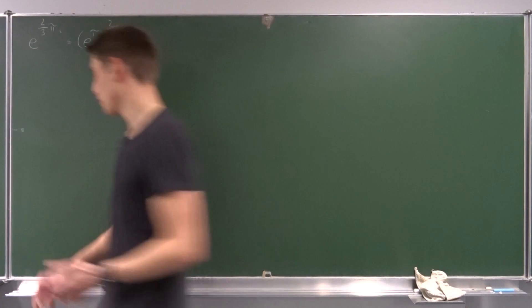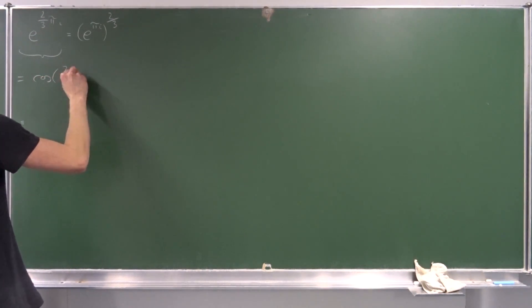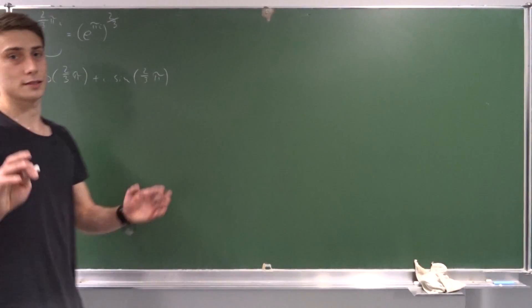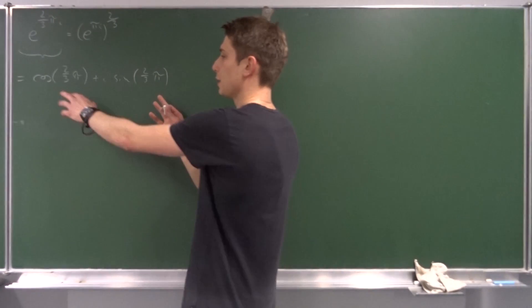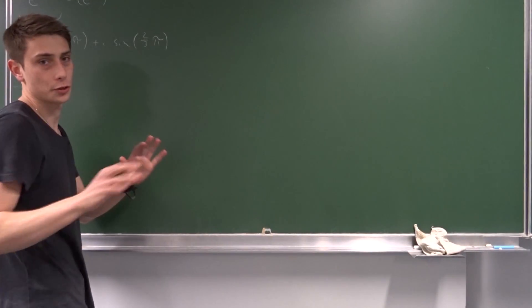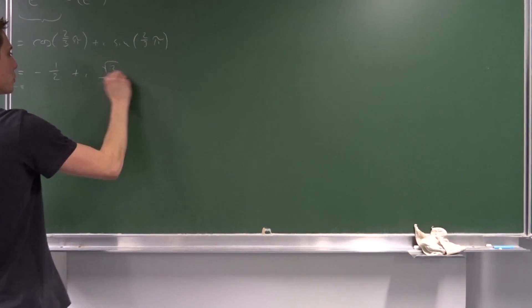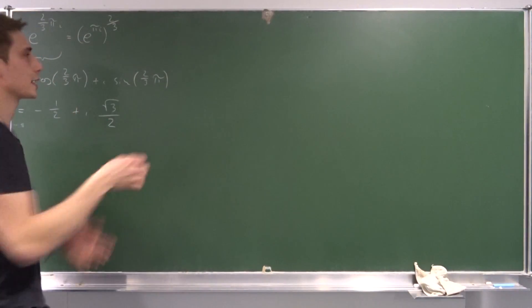We are going to talk about the left side first. Using Euler's formula, we can plug all the values in, so this equals the cosine of two-thirds times pi plus i times the sine of two-thirds times pi. The actual value, if you plug it into your calculator, is minus one-half plus i times the square root of three over two. The user switched those two values — I don't know why.